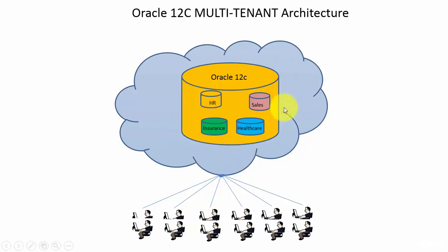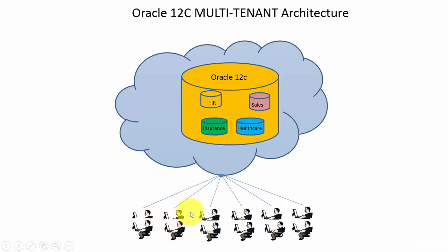Here, our Oracle 12c database is in the cloud and it has various databases sitting within it. Several users are connecting to the cloud and accessing the data present in those various databases. Some users are accessing the HR database, some the insurance database, some the sales database, some the healthcare database. That is why Oracle tagged their Oracle 12 software with a C.